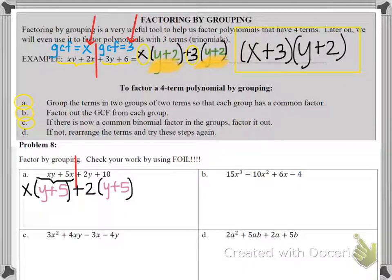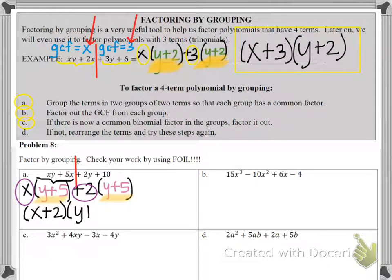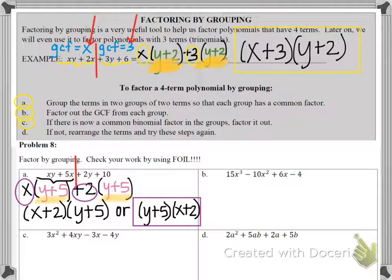So now I'm on step C. If there's now a common binomial factor, factor it out. So this is where you get excited because your y plus 5 matches the y plus 5 in the second pair. And then we take our x plus 2, that makes our first binomial, and then we bring in the y plus 5. Now, you can also write the y plus 5 first if you want to, and then the x plus 2 second. Either way, both answers are correct.